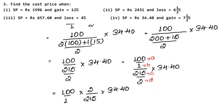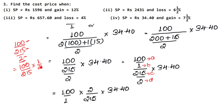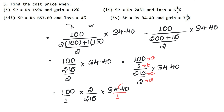So we write: 100/1 into 2/215 into 34.40. The 100s cancel. Removing the decimal — 2 values after point, so multiply by 100, giving 3440. Now simplifying: 5 fours are 20, 5 threes are 15, 5 sixes are 30, 5 eights are 40 — giving 2 into 688 upon 43. Then 2 into 688 is 1376 upon 43.